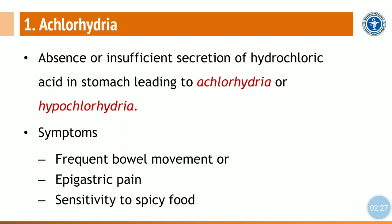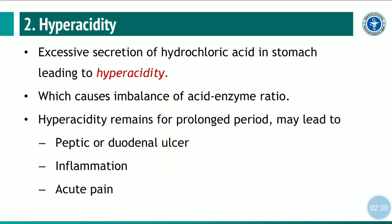The second condition is hyperacidity, in which there is excessive secretion of hydrochloric acid in the stomach. Due to hyperacidity, it may lead to an imbalance of the acid-enzyme ratio. If hyperacidity remains untreated for a prolonged period, it may lead to peptic ulcer or duodenal ulcer, inflammation of the intestines, and acute abdominal pain, so it should be treated immediately.